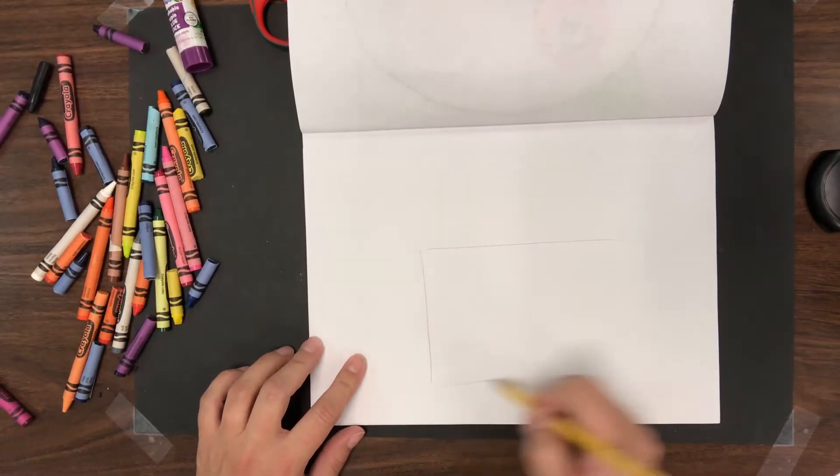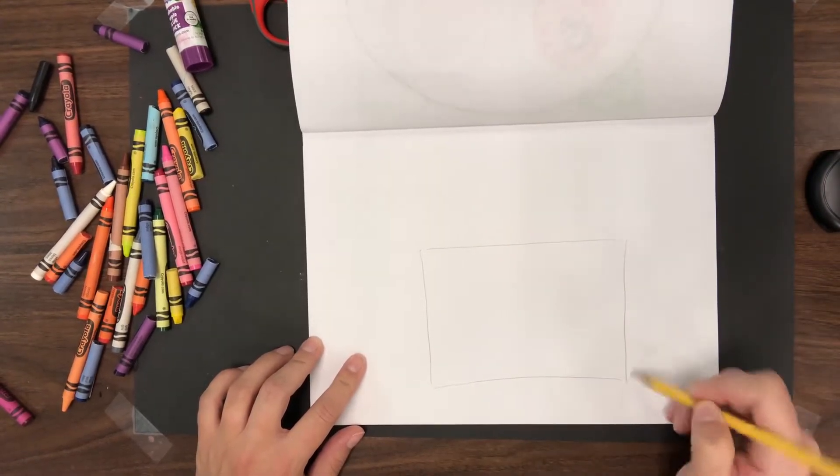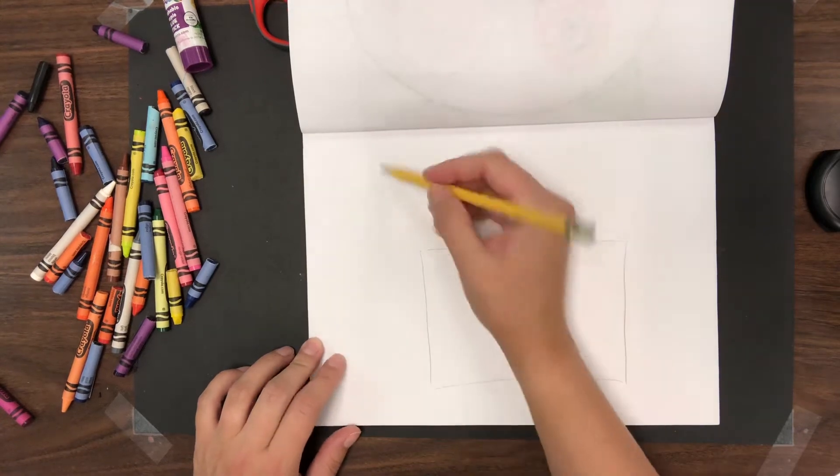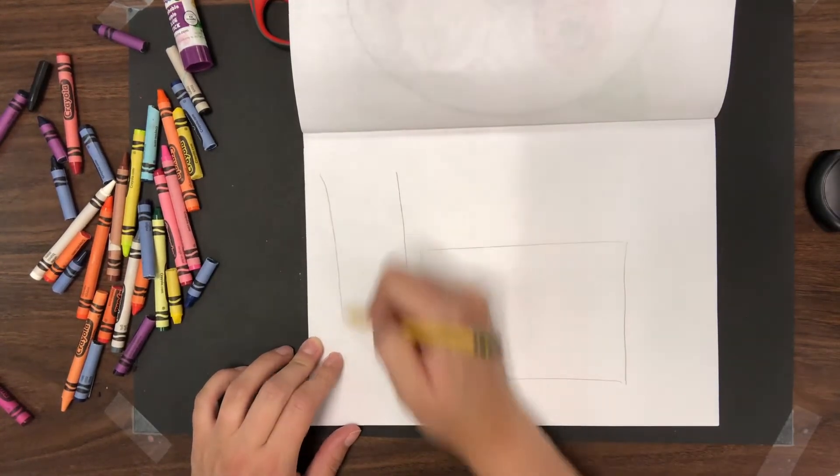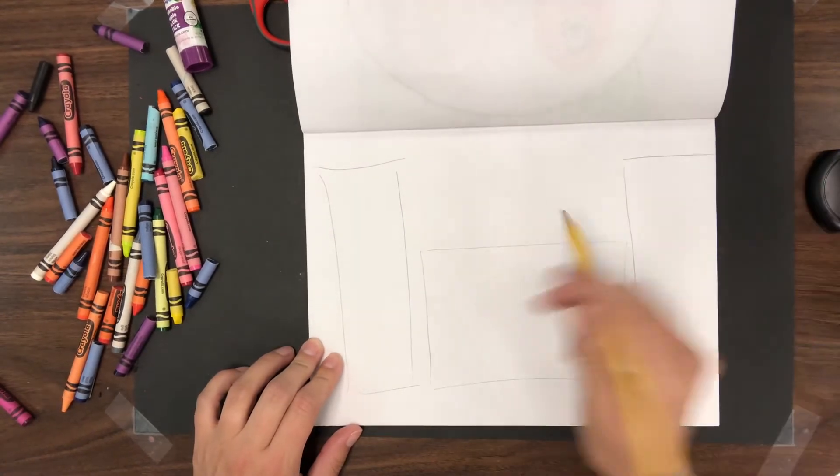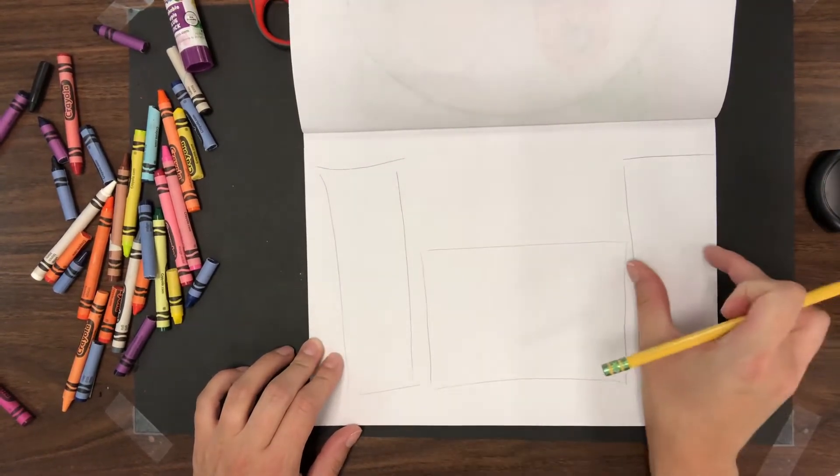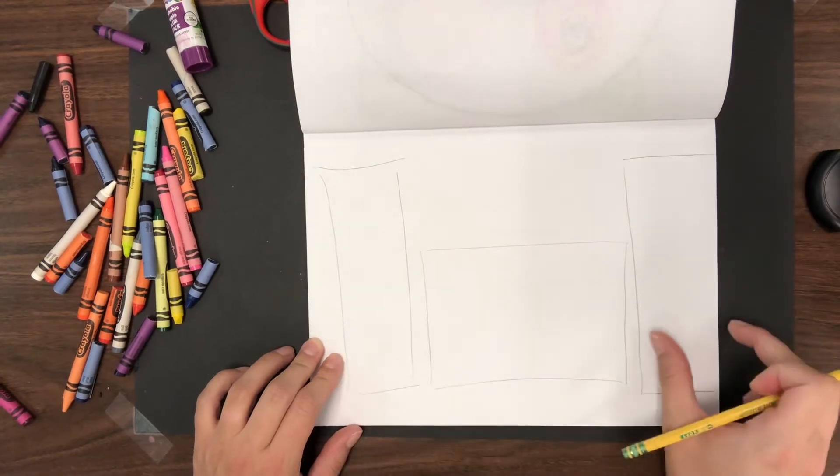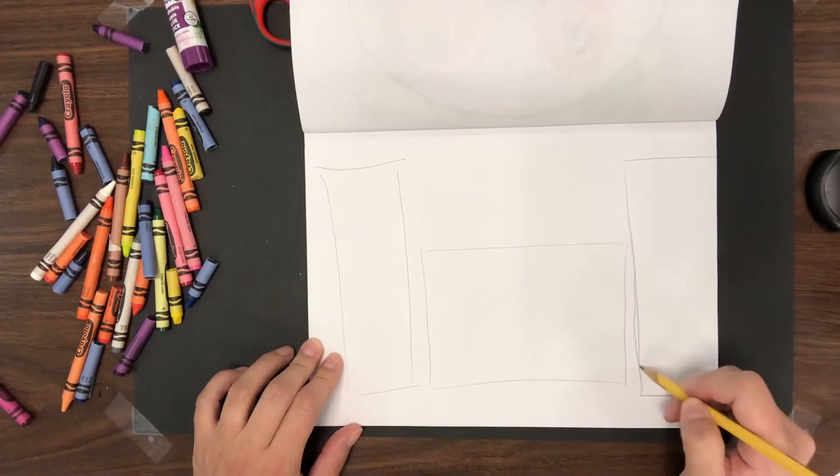A castle would need sort of a big rectangle for the main part of the castle. Then I want it to have big tall sides - that would be kind of like two rectangles. I'm trying to make them about the same size. I'm just drawing it out on my paper.